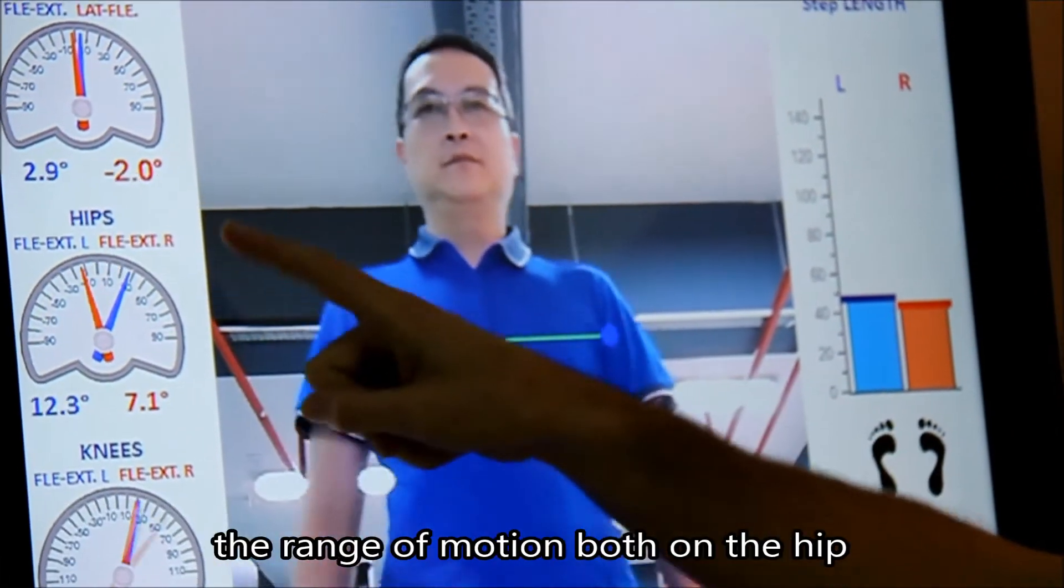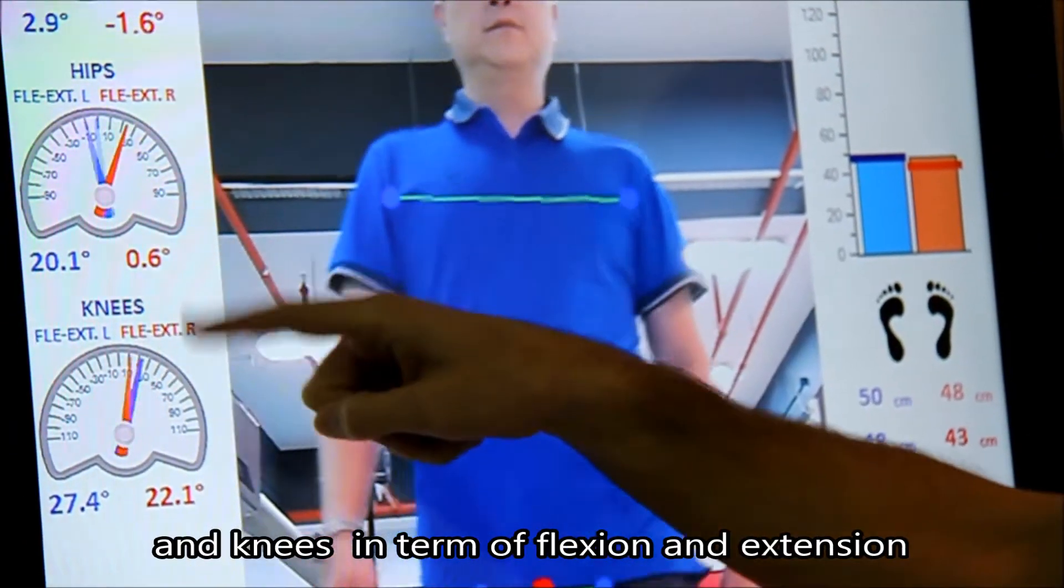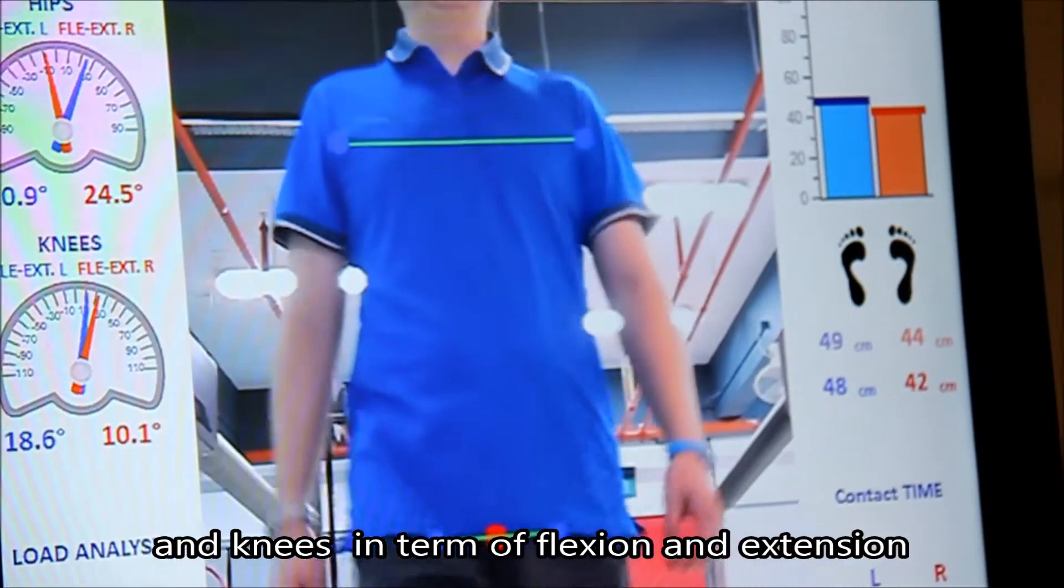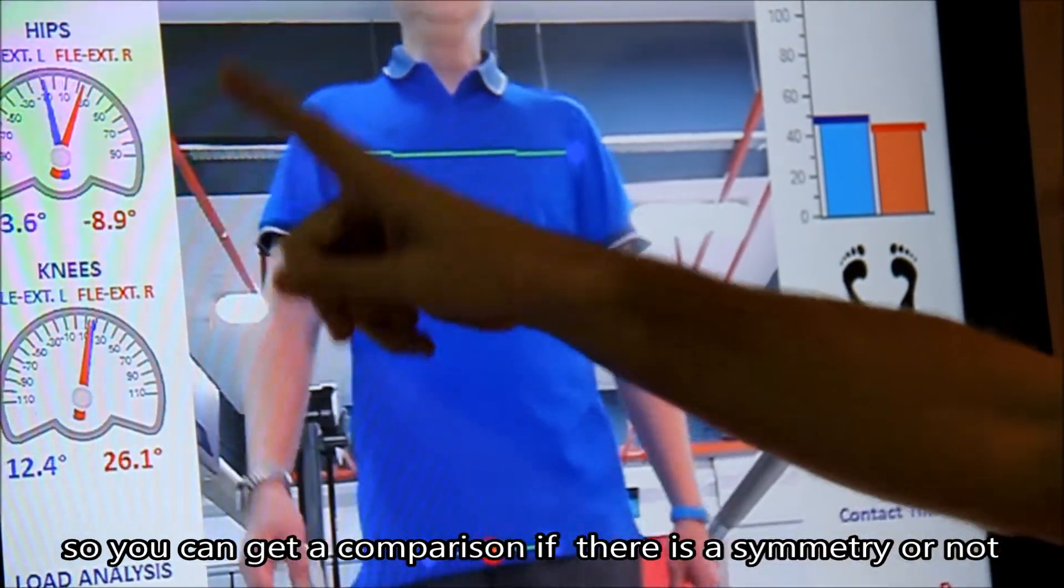We can understand then the range of motion, both of the hips and the knees, in terms of flexion, extension. So we can get a comparison. We can see if there is a symmetry or not.